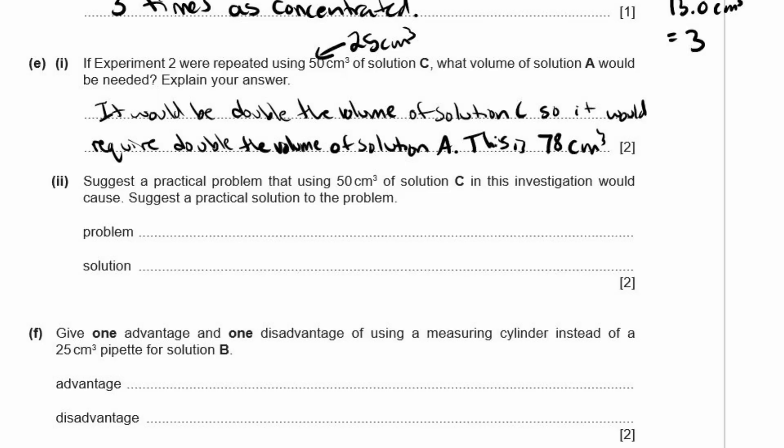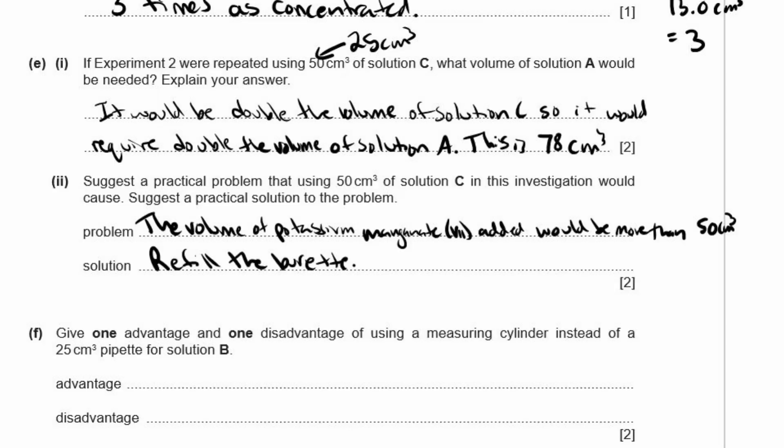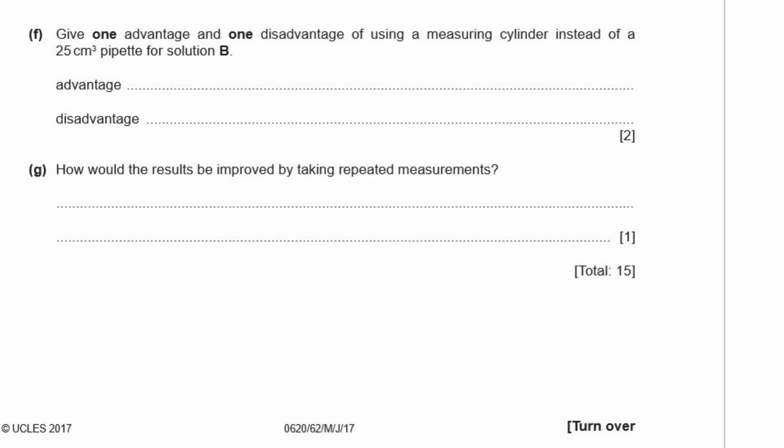Two, suggest a practical problem that using 50 centimeters cubed of solution C in this investigation would cause. And suggest a practical solution to this problem. Okay. So the problem is, is that most of the burettes you'll be using will probably go up to 50 centimeters cubed. And if this takes 78 centimeters cubed, you're going to have to fill it up more than once. So the volume of potassium manganate 7 added would be more than 50 centimeters cubed. So the practical solution, refill the burette when it gets empty.